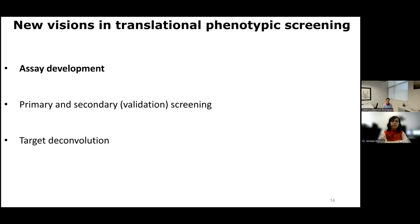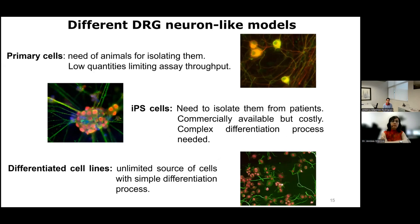Translational phenotypic screening consists of the selection of drugs based only on quantifiable phenotypic endpoints from cell-based assays, without previous knowledge of the target. It usually comprises three stages: assay development, primary and secondary screening, and target deconvolution.